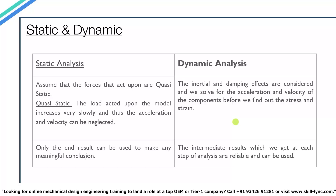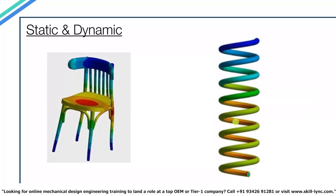To summarize: a static analysis can only be performed when the system does not depend on time and the loads applied are constant. A good example is the simulation of a load on a chair. In dynamic analysis, the system, the load, or both may change with time — a good example being the simulation of a spring's compression. Depending on the requirement, one may choose either approach.